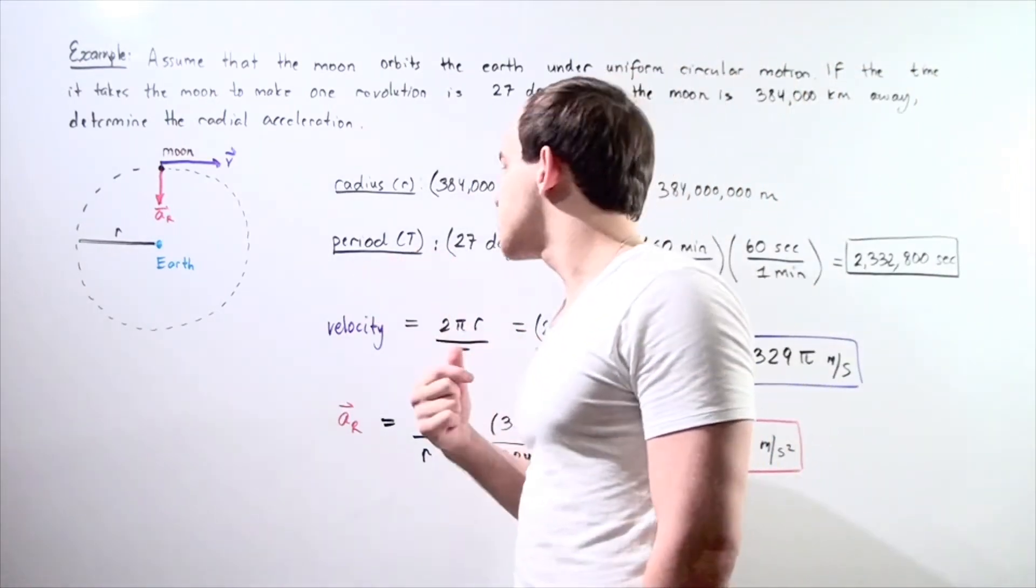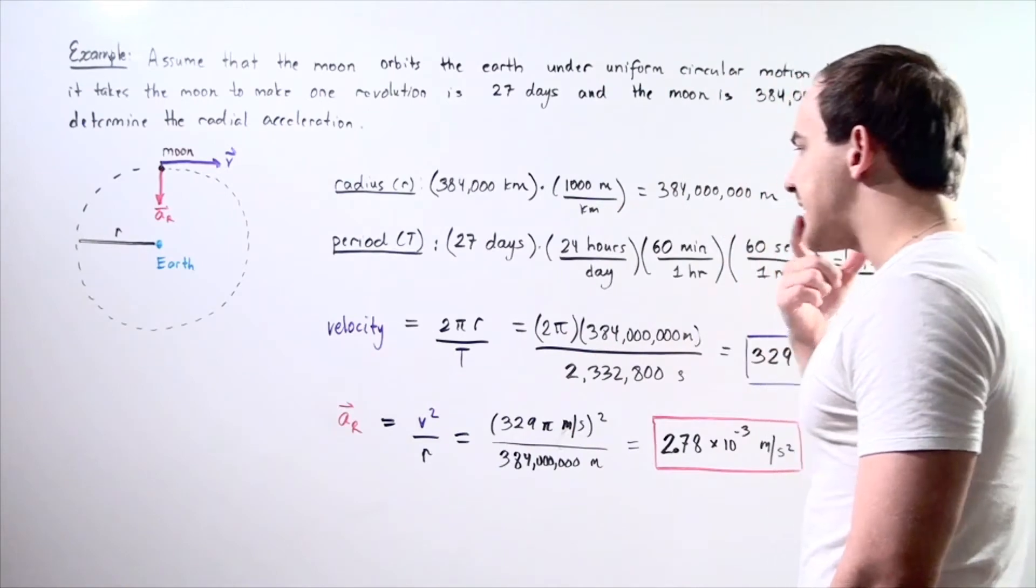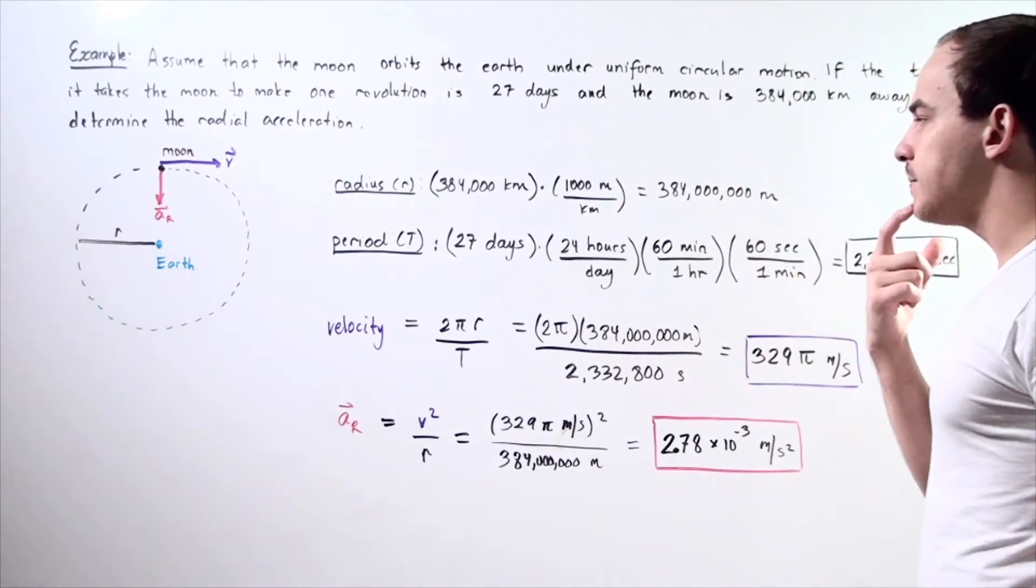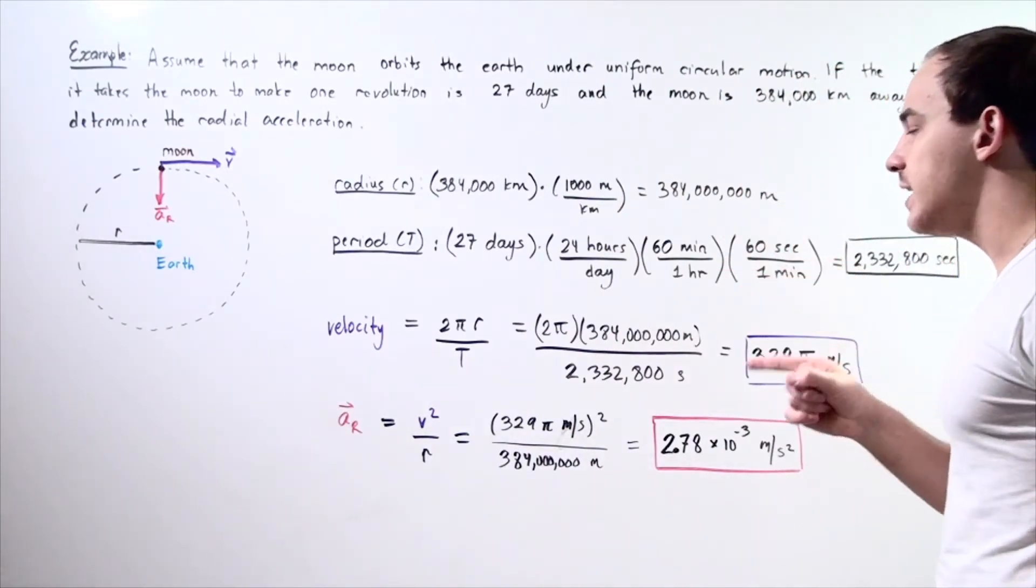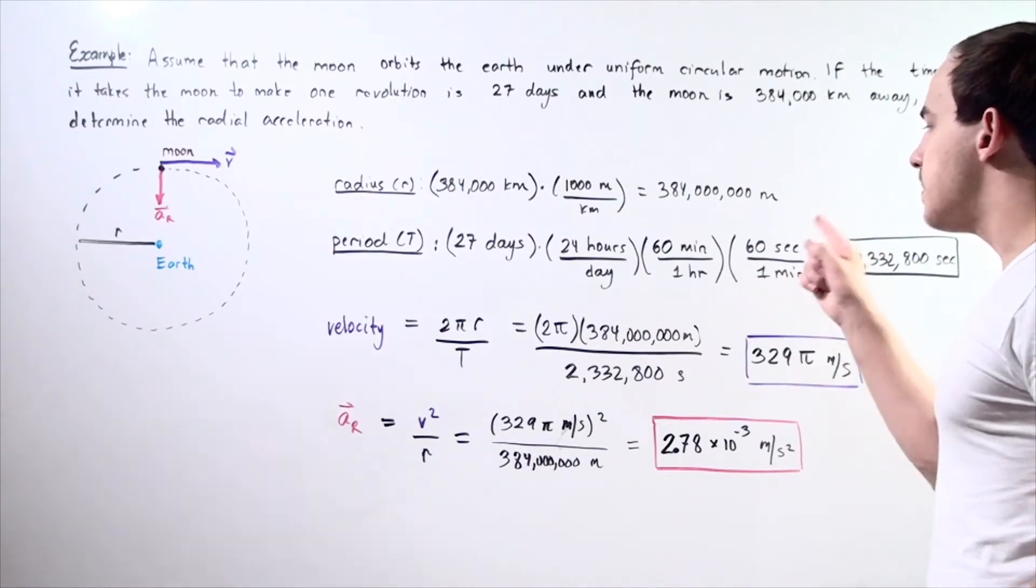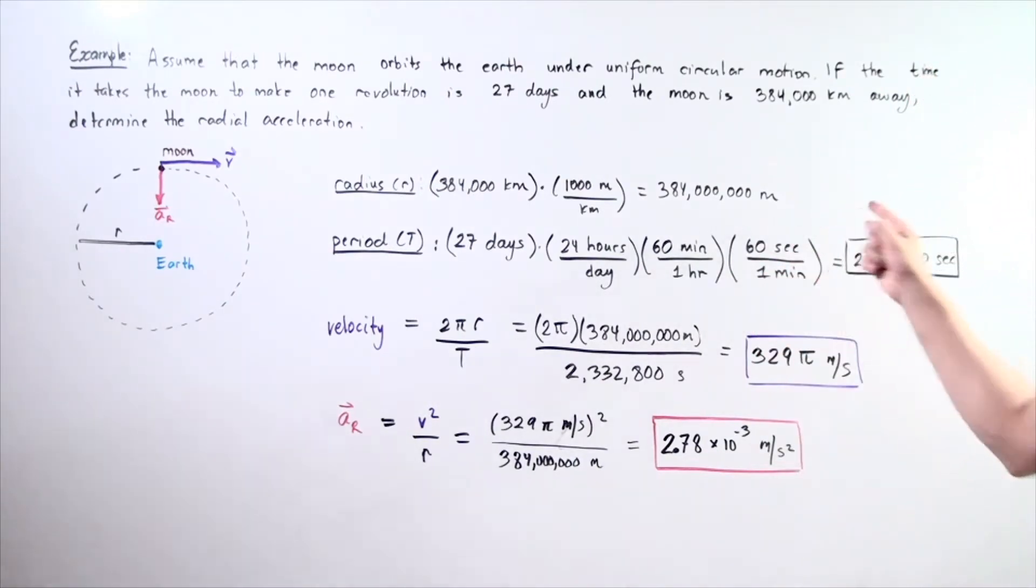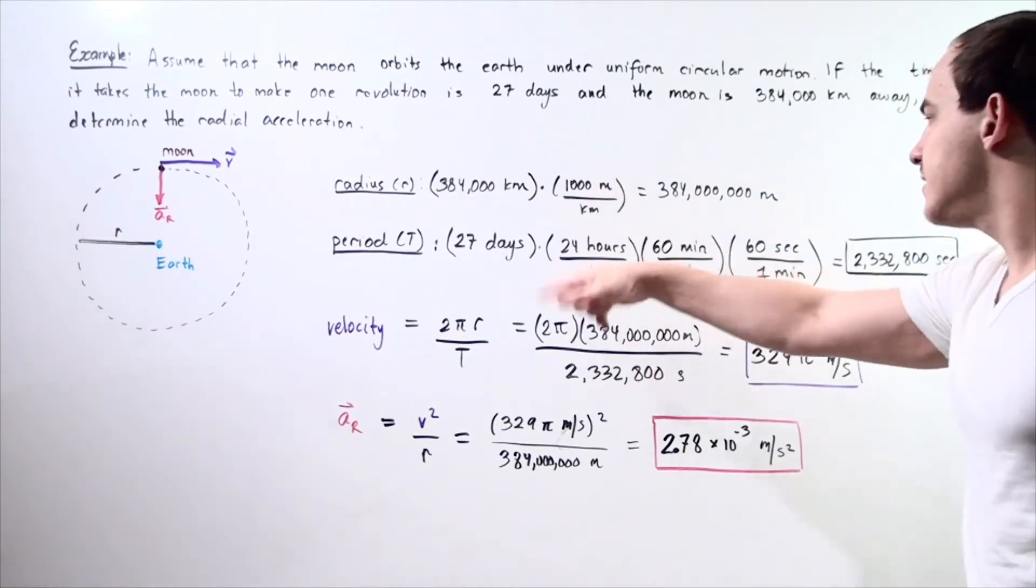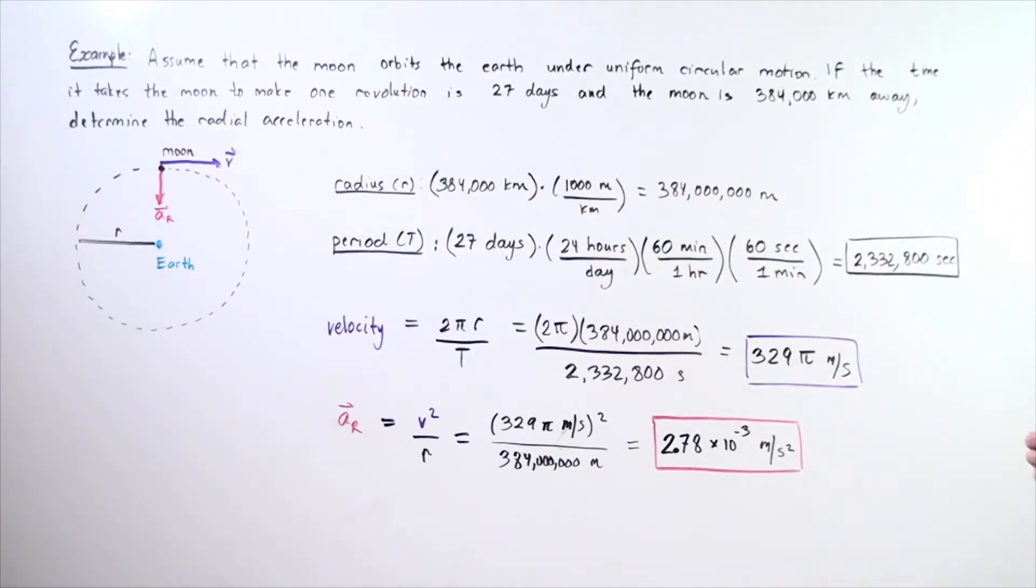What about our period? Approximately 27 days multiplied by 24 hours per day multiplied by 60 minutes in an hour multiplied by 60 seconds in a minute. The days, hours, minutes cancel, and we're left with seconds. Approximately 2,332,800 seconds in an hour period.